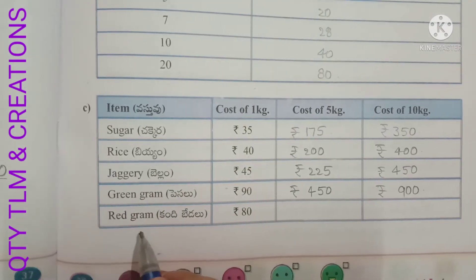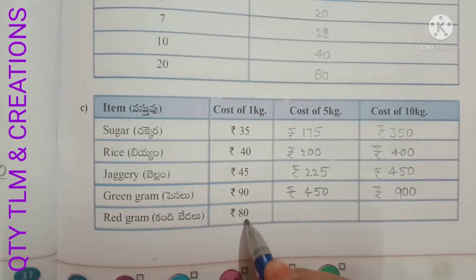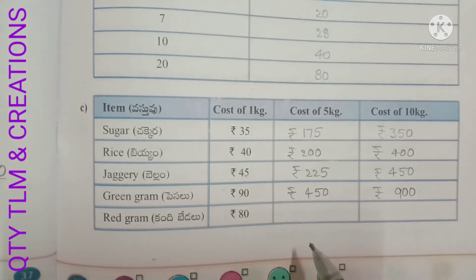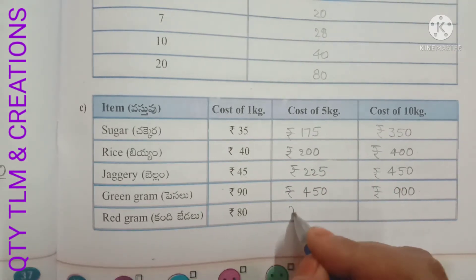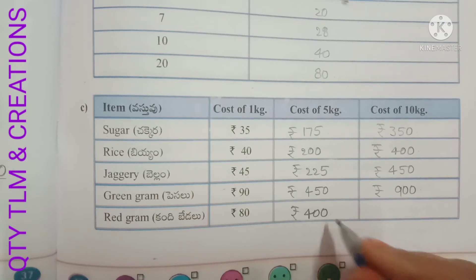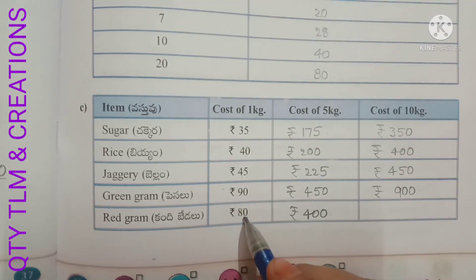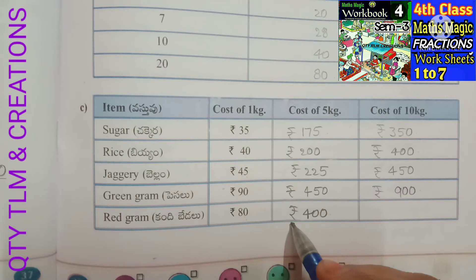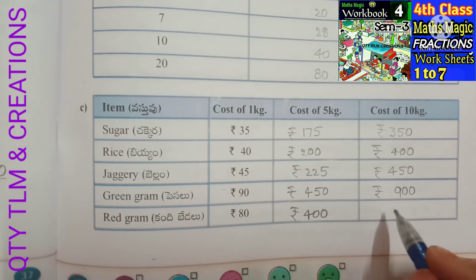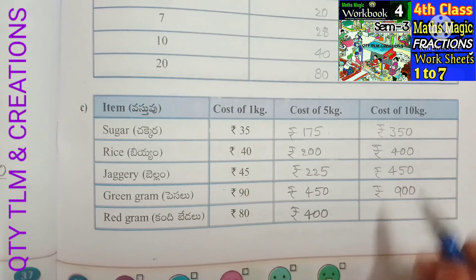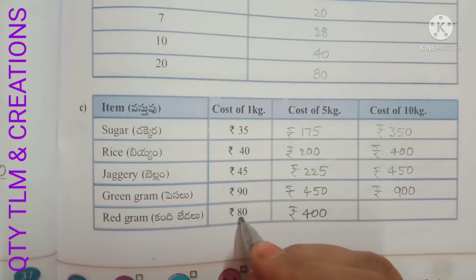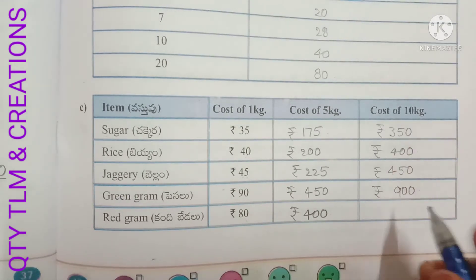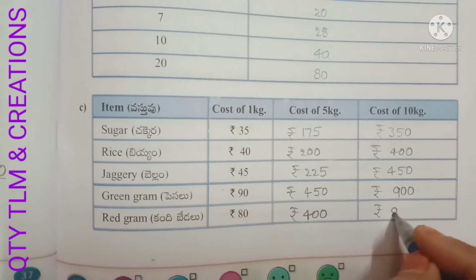Next: red gram. Cost of 1 kg equals 80 rupees. Cost of 5 kg: 80 into 5 equals 400 rupees. Cost of 10 kg: 80 into 10 equals 800 rupees.